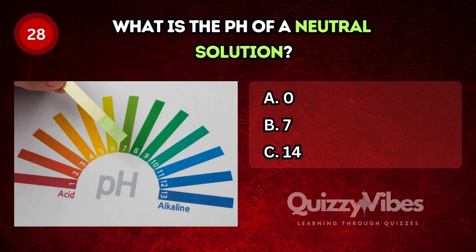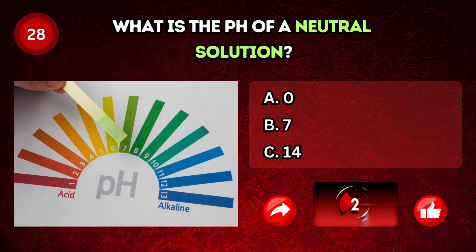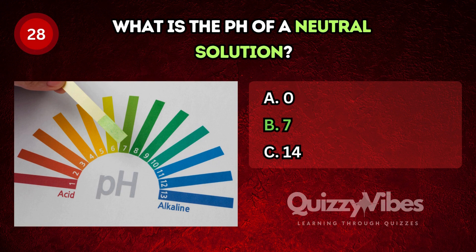What is the pH of a neutral solution? Answer B, 7.